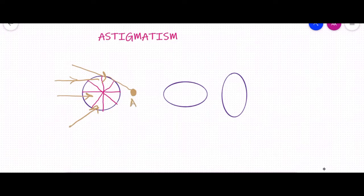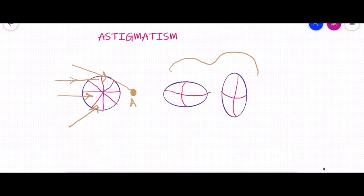However, if we consider two ovoid surfaces, obviously their meridians will not be equal. In the first one, the vertical meridian is going to be more curved, and in the second one, the horizontal meridian is going to be more curved. So if light passes through such a surface, it will not get focused at one single point. Instead, it will get focused at two points, forming what is called a line focus.